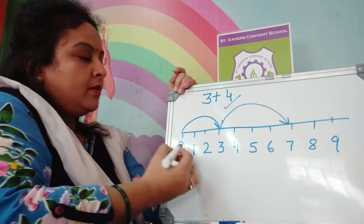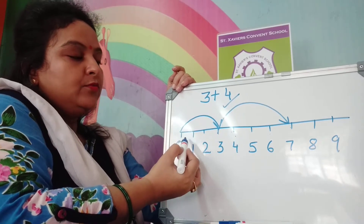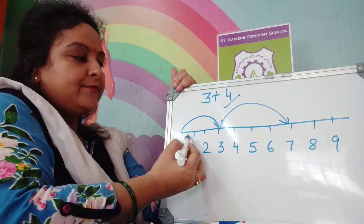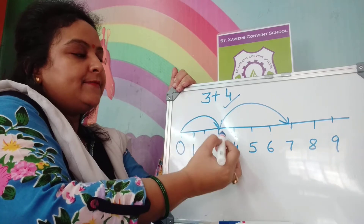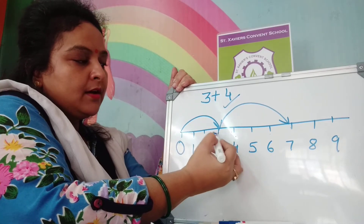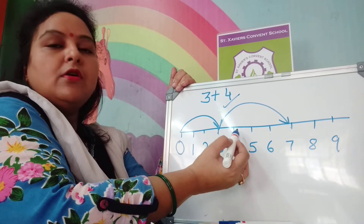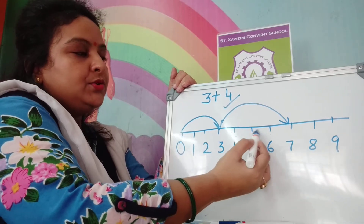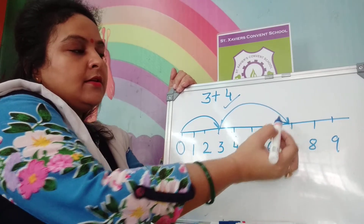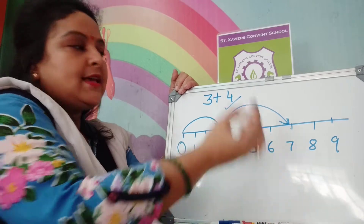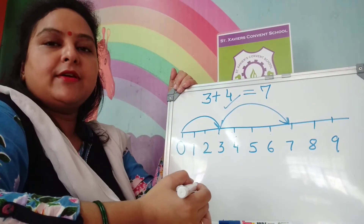So to recap: you will start from 0 and move 3 steps — 1, 2, 3. Then you add 4 steps further: 1, 2, 3, 4. It comes on number 7. So the answer will be 7.